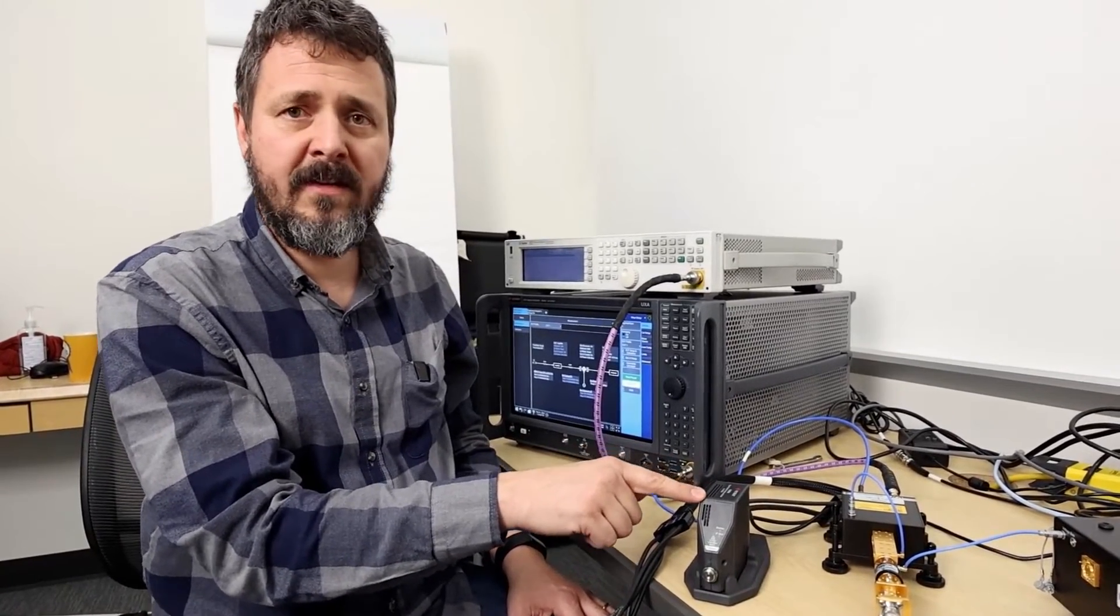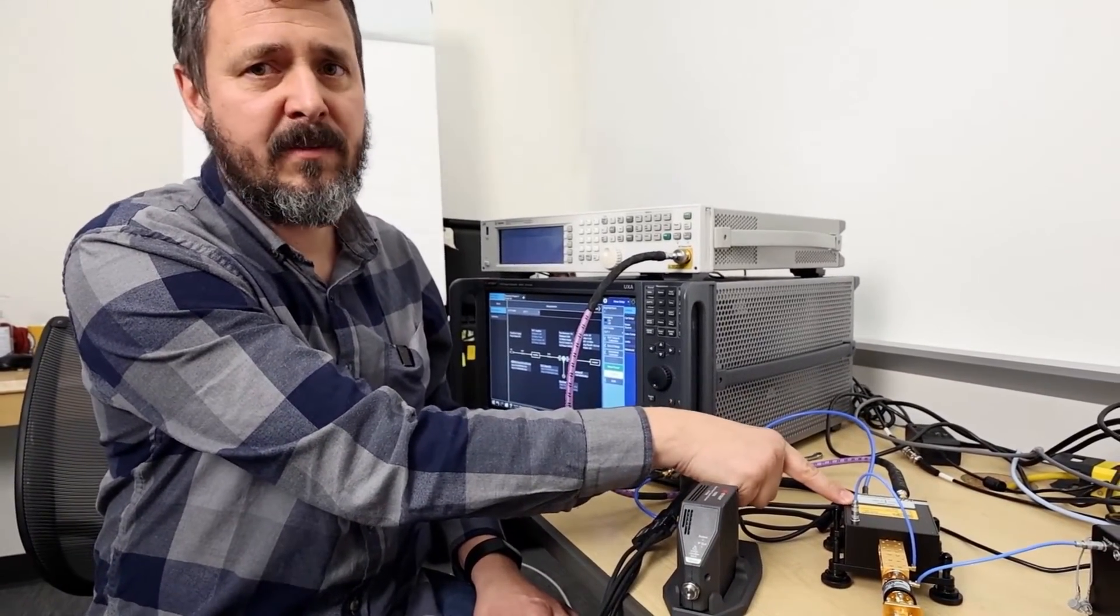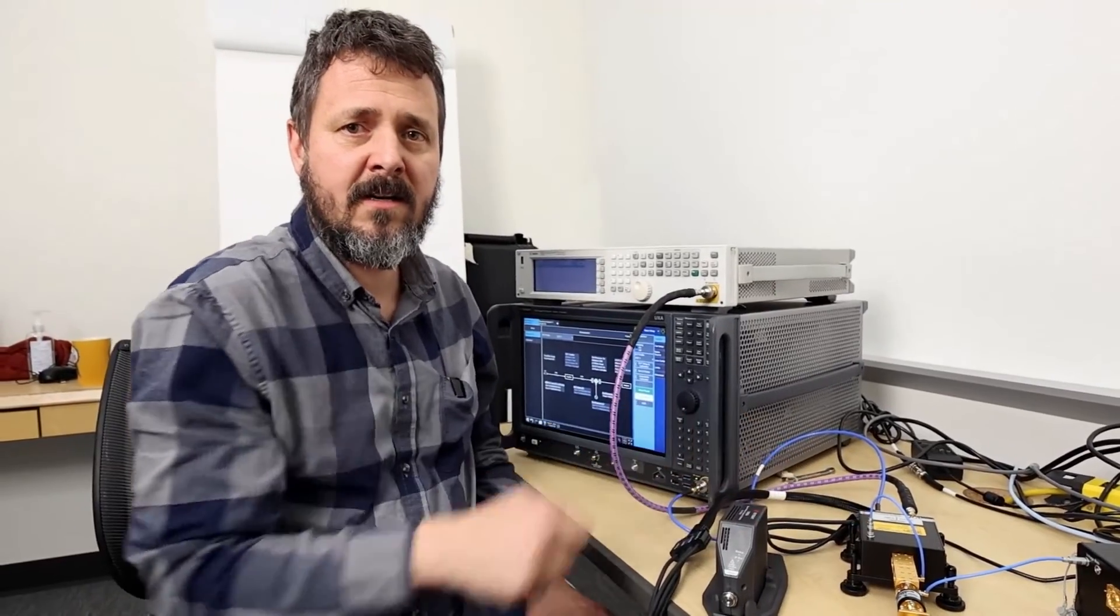So in summary, I've showed you two different ways to make noise figure measurements above 50 gigahertz. The frequency range extender works over 50 to 87 and a half gigahertz. With the VDI downconverters, you can make measurements all the way up to 330 gigahertz.